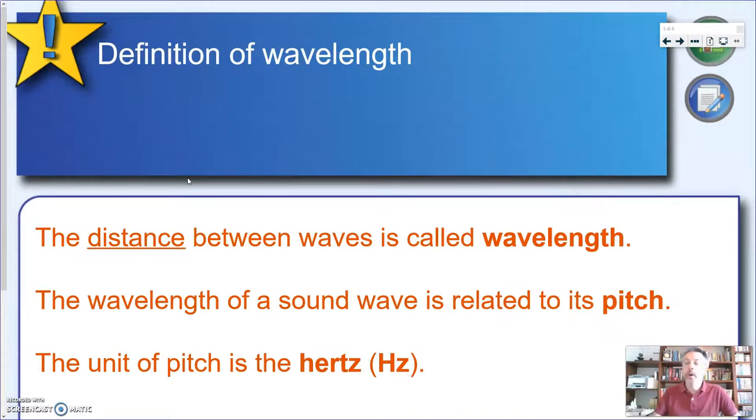The second physical quantity related to waves is the wavelength. And as I told you before, is defined as the distance between two consecutive waves. This distance is related to another feature of sound, which we call the pitch. Actually, the pitch is related to something else we call the frequency, which actually is the number of waves per second. But in both cases, the unit is called the hertz.